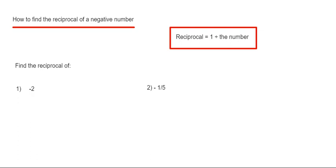So let's have a look at our examples here. Our first one is to find the reciprocal of minus 2. So to do this we just need to do 1 divided by minus 2.